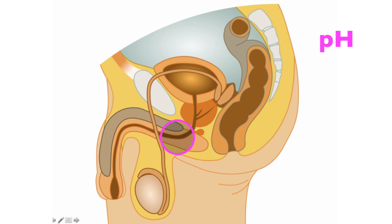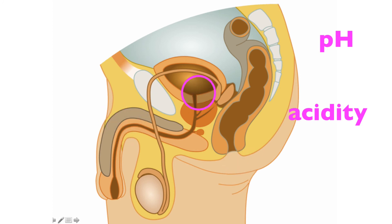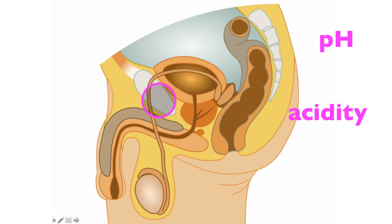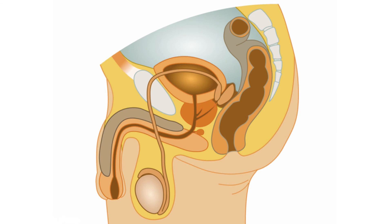When we talk about pH, we're talking about the acidity or lack thereof of fluid in the body — in this case the urethra. Urine can be very acidic, so if acidic urine has been going through the urethra, that acidity can damage or kill the sperm cells traveling through it. So the pre-seminal fluid from the bulbourethral gland will help neutralize or reduce the acidity so the sperm cells can survive along their journey through the penile urethra.